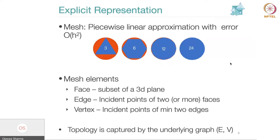You increase it to 24 and keep doing that, and you notice that the more sides a polygon has, the better the representation becomes — the closer it gets to the circle. The takeaway is that you can represent an arbitrary shape with a piecewise linear representation, in this case a polyline representation.